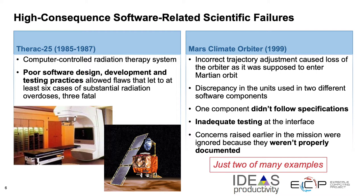And then there was the loss of the Mars Climate Orbiter in 1999. Incorrect trajectory adjustments caused the loss of the orbiter just as it was about to enter the Mars orbit. This was caused because two different software components had a discrepancy between them in the units — one of those components did not follow specifications. There was inadequate testing at the interface, and even though there had been concerns raised earlier, they were not properly documented and those concerns were ignored.